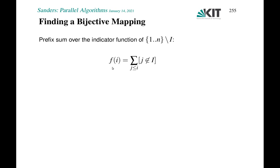For the bijective mapping, we simply do a prefix sum computation similar to what we did in QuickSort. The prefix sum is computed over the indicator value of whether j is not in the independent set — we set a 1 if the element is not in the independent set. By computing a prefix sum, we enumerate the elements not in the independent set and use that as an index into the contracted subproblem.